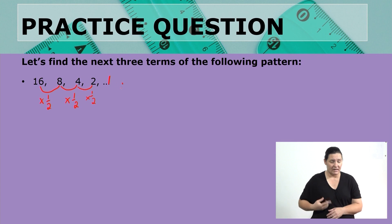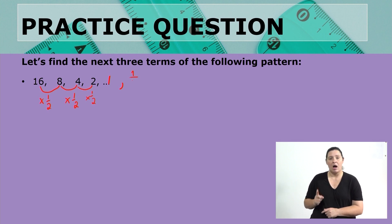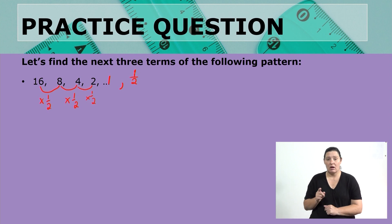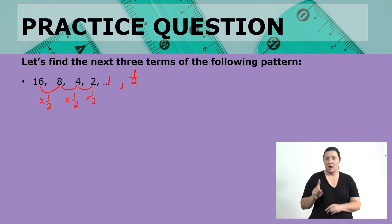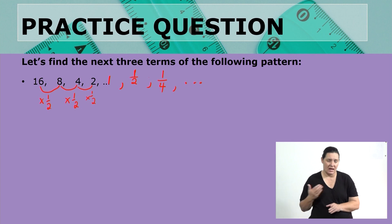That would be 1. And then from 1, if I multiply by half, what would be the next term? That would be one half. And if I multiply one half by half, what would be my answer? Yes, that would be one quarter. And of course that pattern can continue indefinitely.